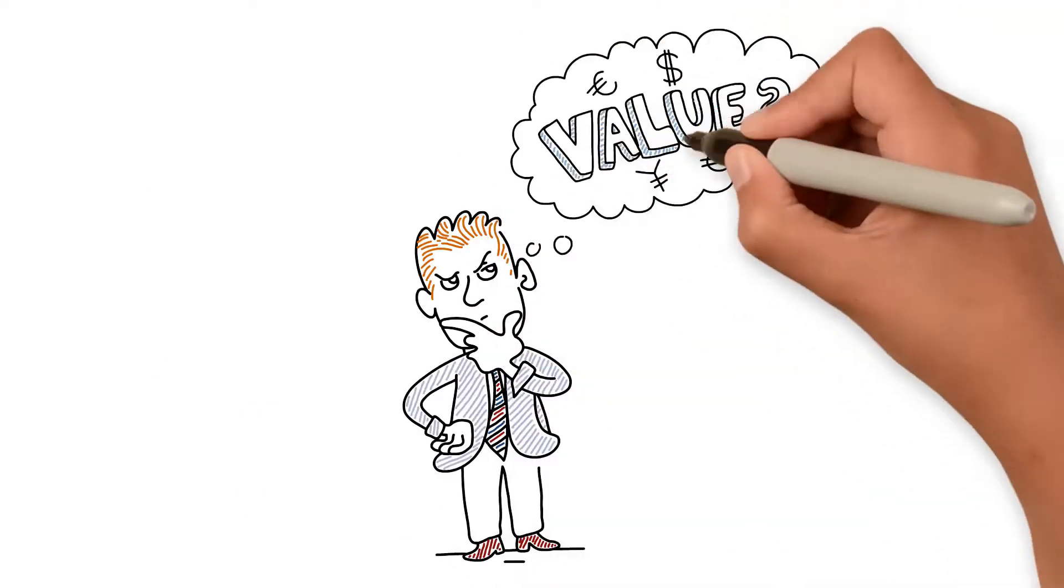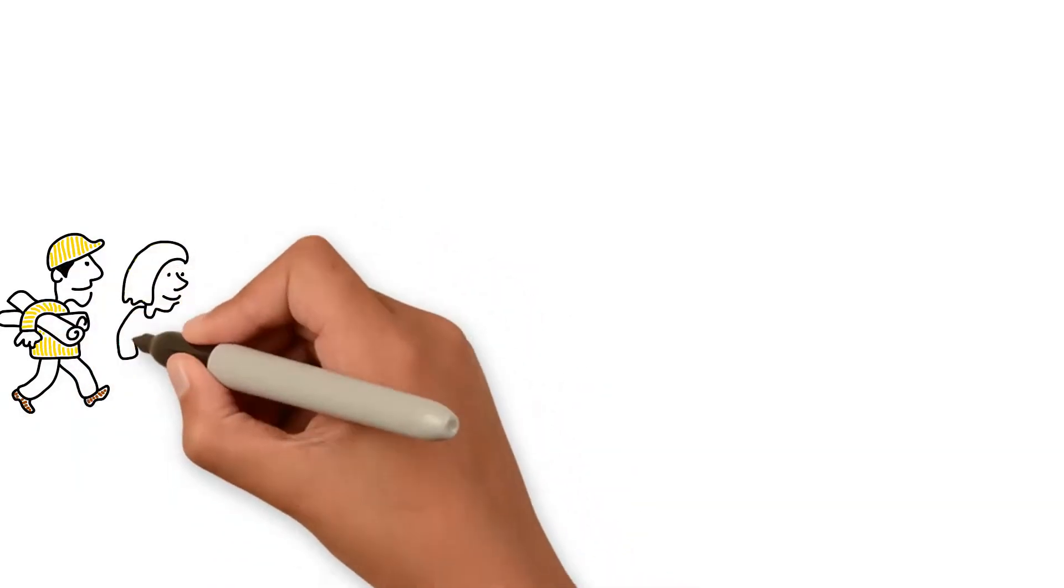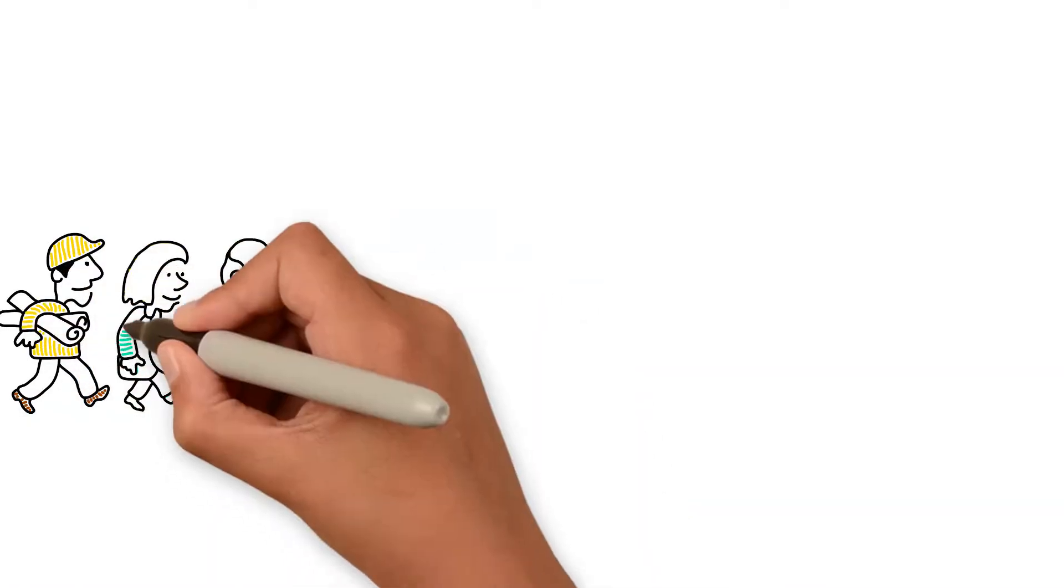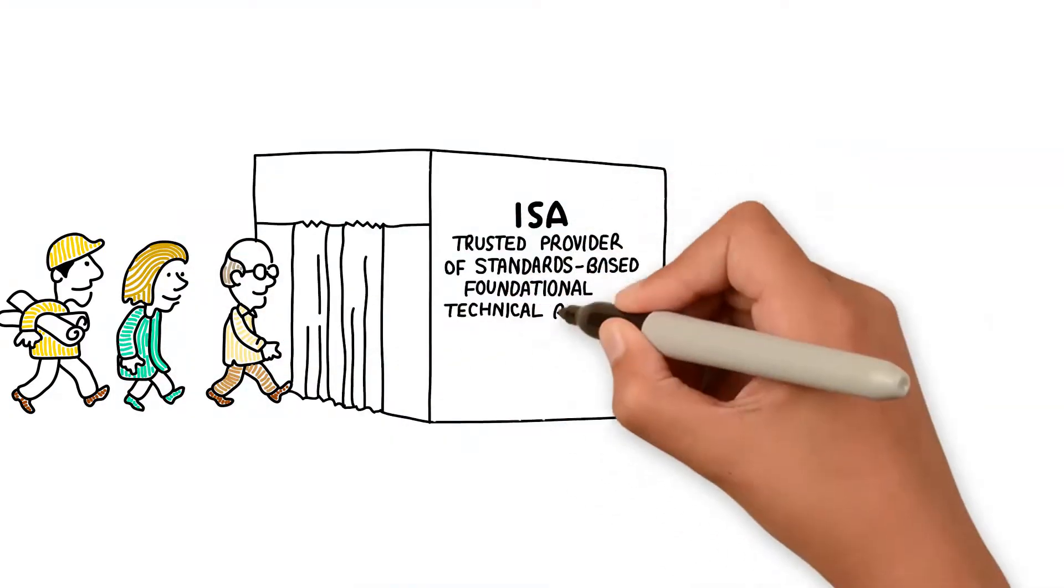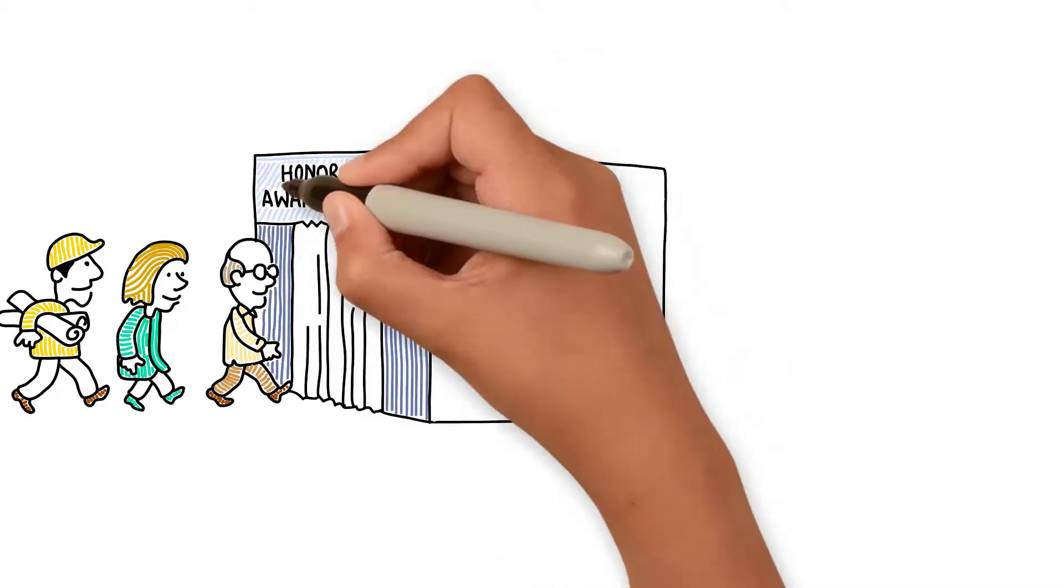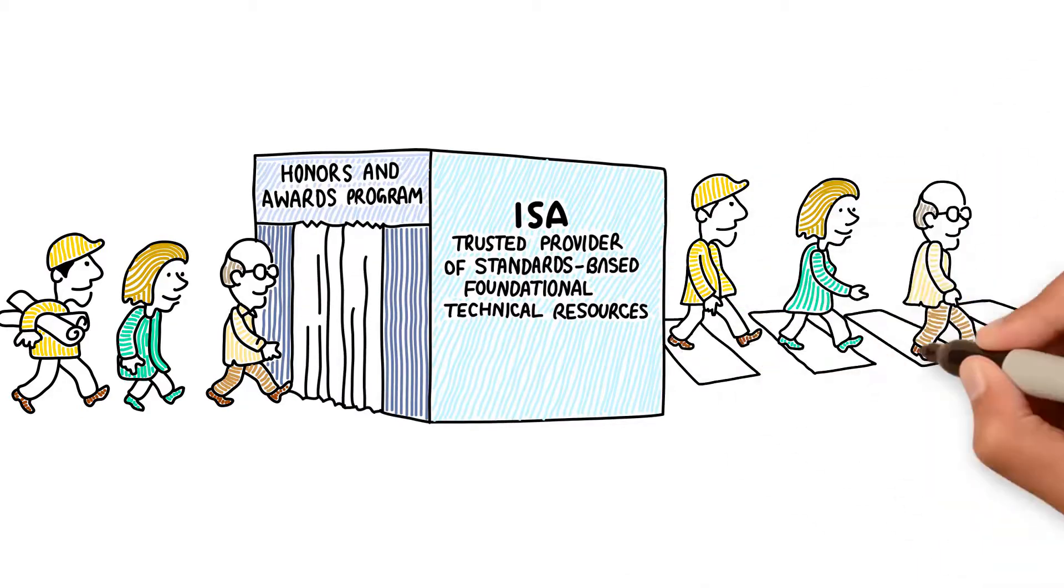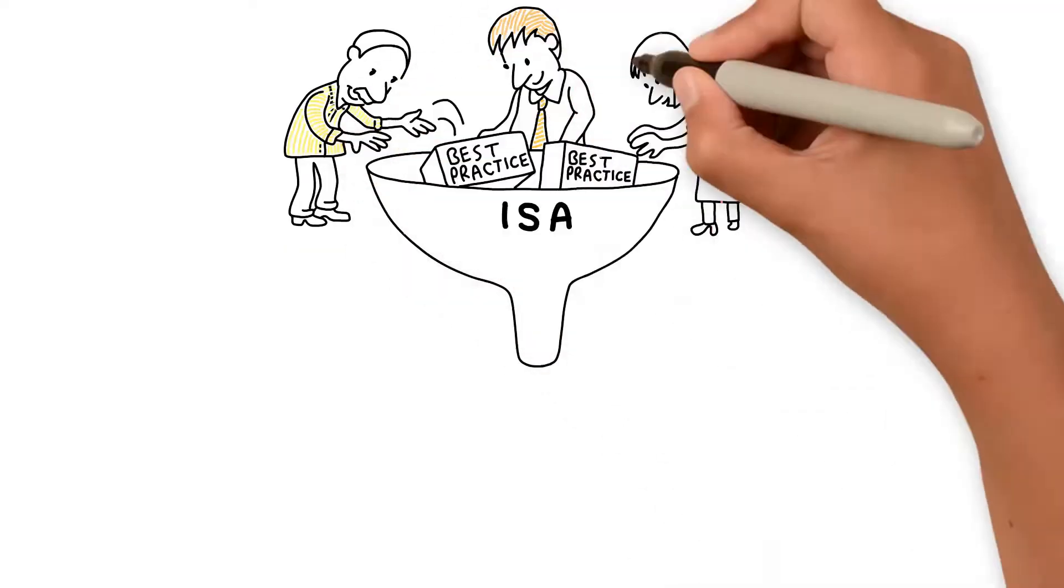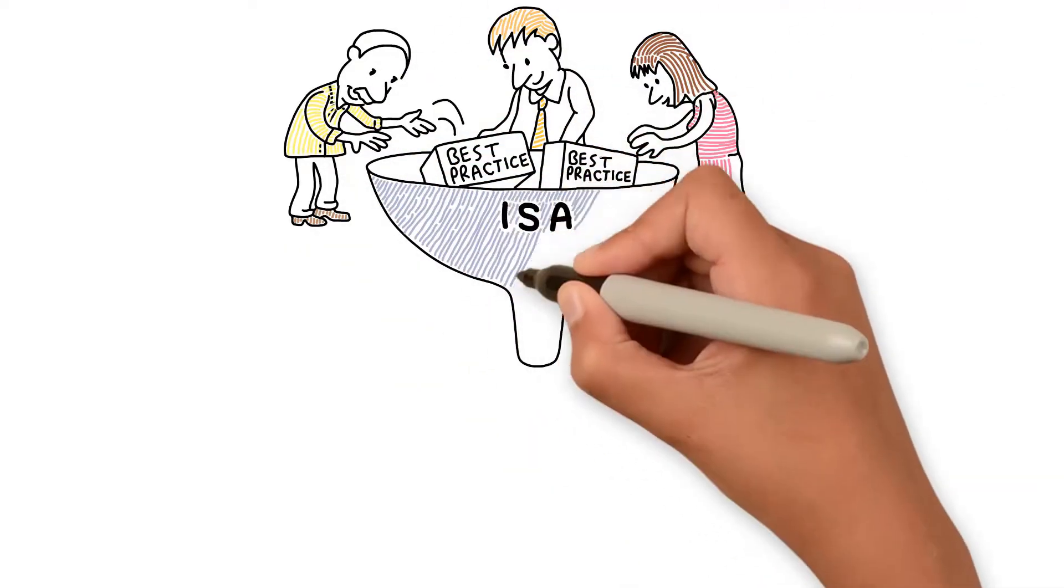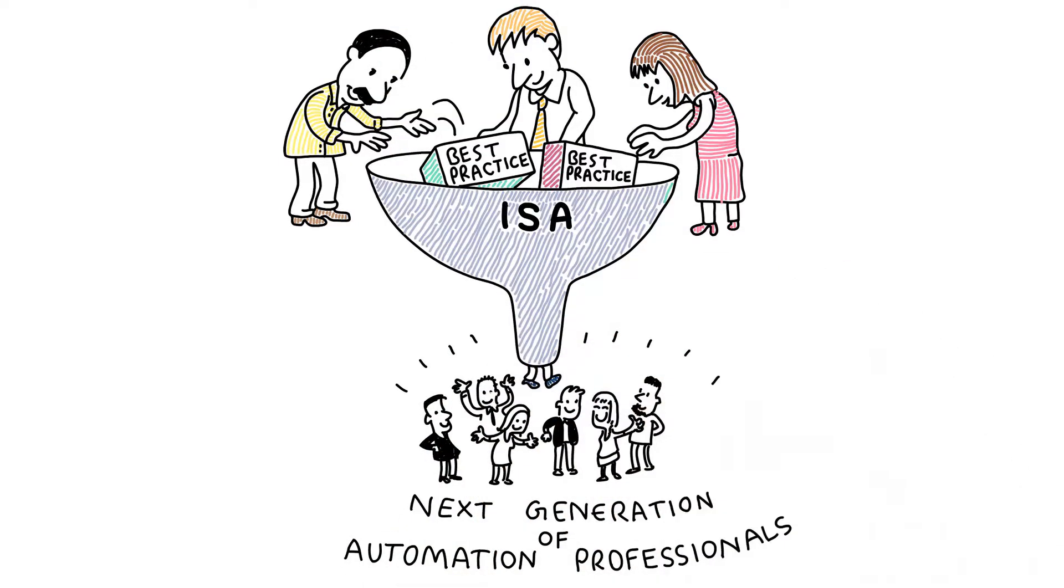How does ISA bring value? For engineers, technicians and management engaged in industrial automation, ISA is the trusted provider of standards-based foundational technical resources, driving the advancement of individual careers and the overall profession. Through our prestigious honors and awards program, we also turn technical experts into automation rock stars. ISA brings the right people together to create the technologies of the future and share their best practices with the next generation of automation professionals. We're truly the stewards of the profession.